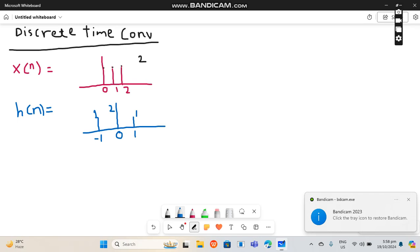In this video we will do discrete time convolution. You have to be very careful: when n comes it tells us that it is discrete, when t comes it is continuous. This is x of n signal with amplitude 2, and this is h of n with amplitudes 1, 2, 1.